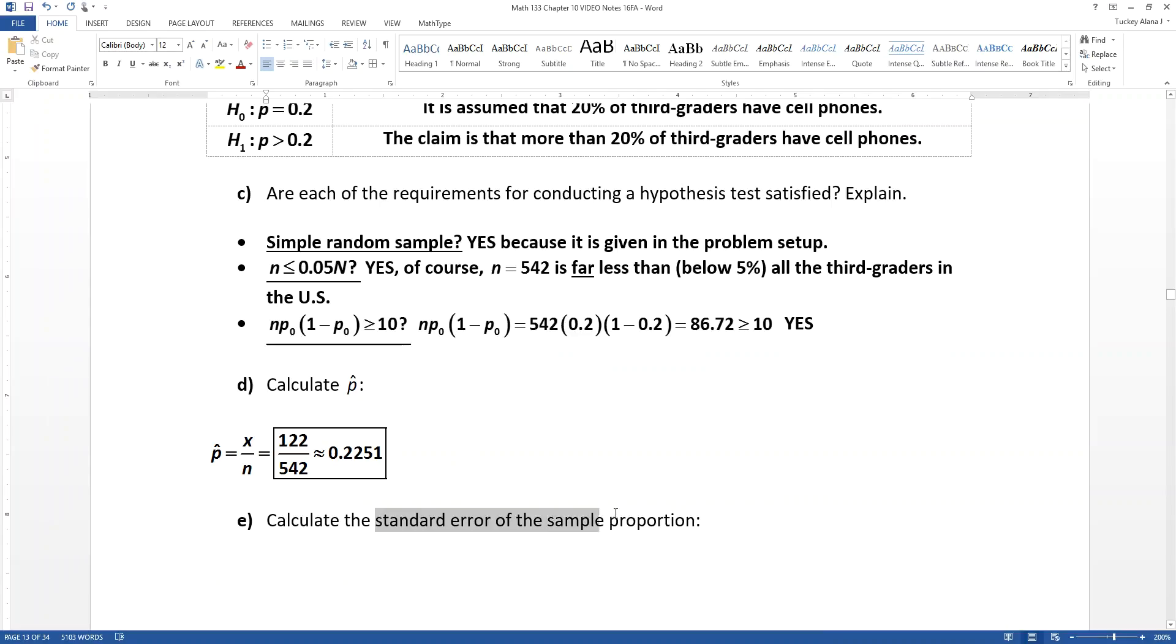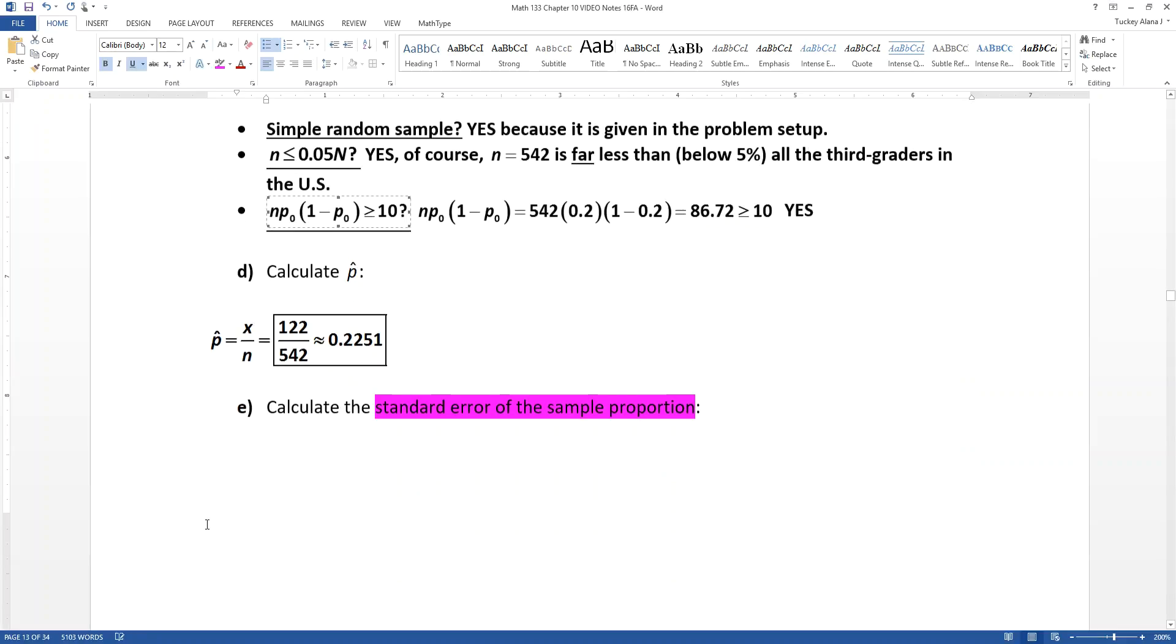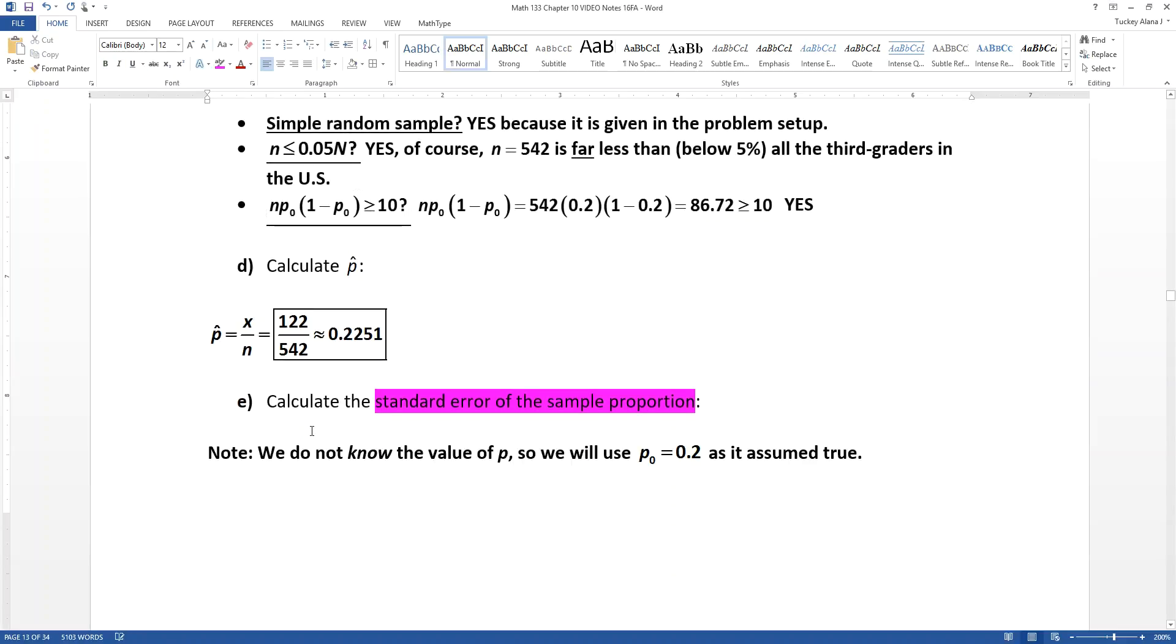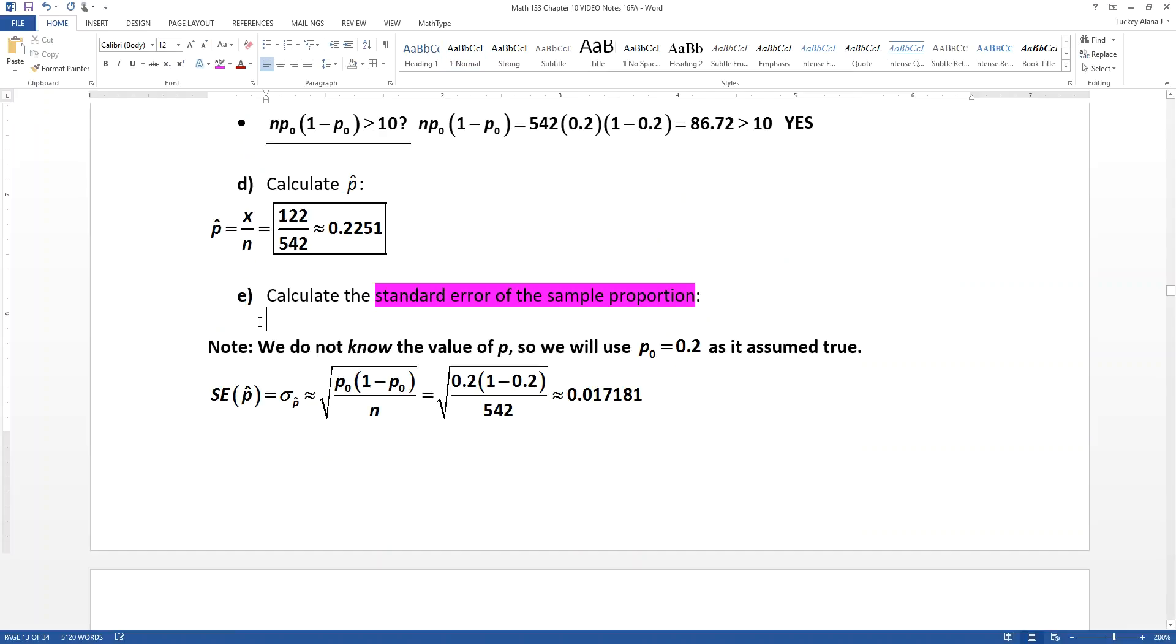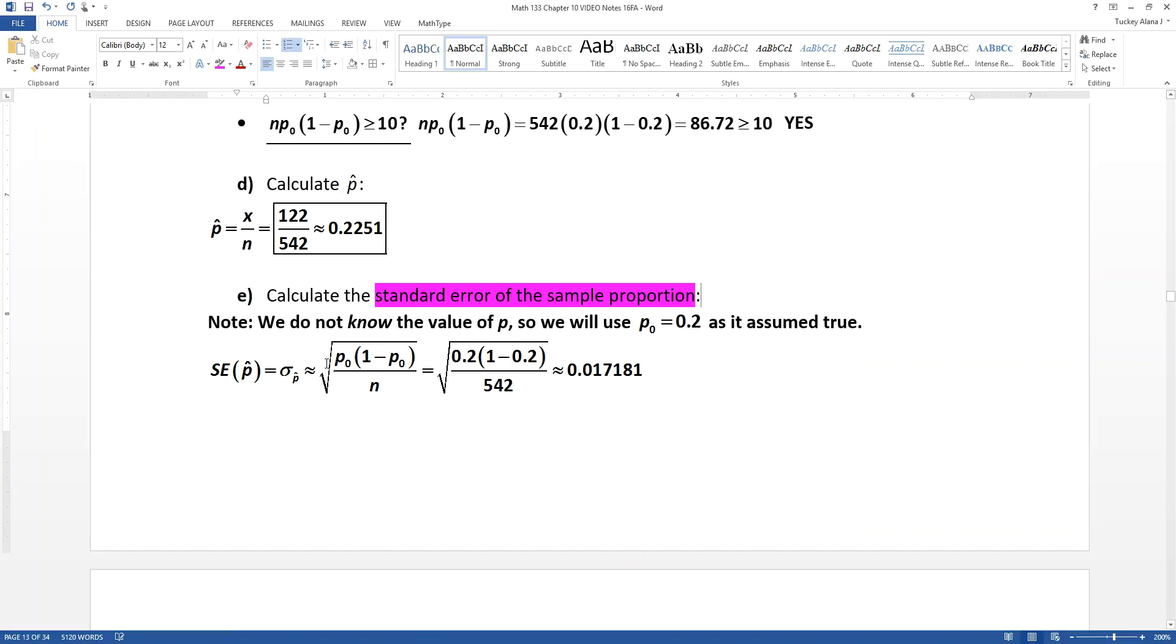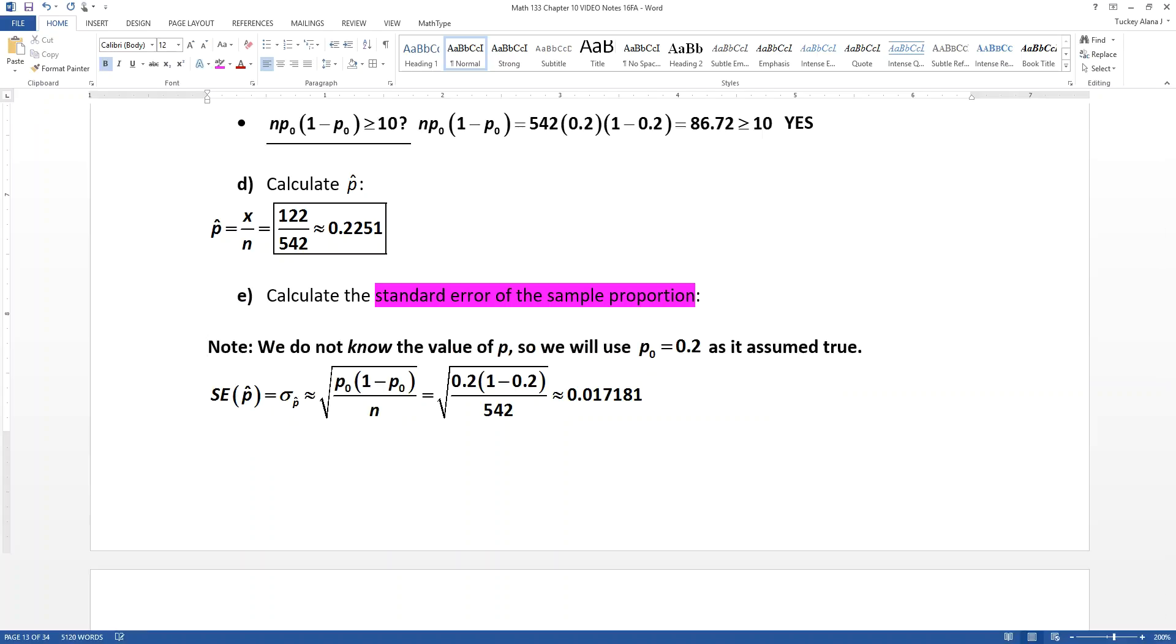Now the standard error of the sample proportion, if you recall, we have a formula for back a few pages ago. It's the standard error of the P hat. So we don't really know what P is, but we're going to use the assumed P value of 0.2 from our hypotheses. So even though we don't know the value of P, we're going to use P0. So it's the square root of P0 times 1 minus P0 all over N.